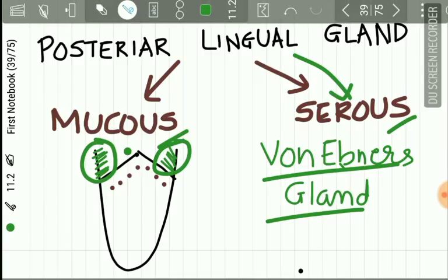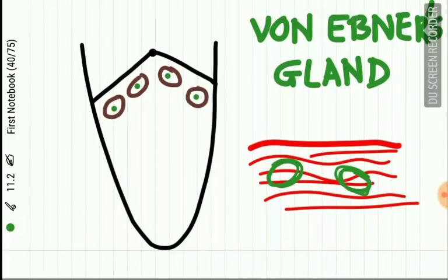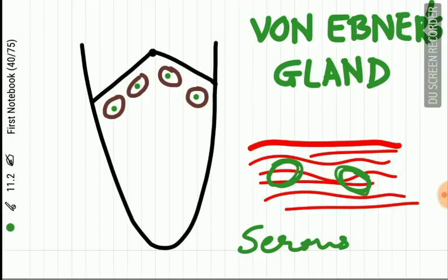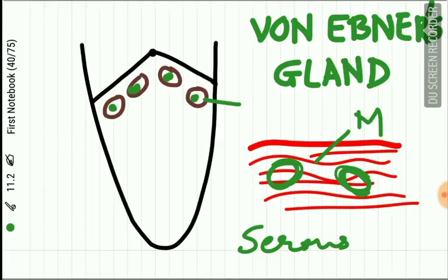The posterior lingual serous gland is called the gland of von Ebner — a very important topic frequently asked in exams. It is a pure serous gland present in between the muscles of the tongue, and it opens into the circumvallate papilla.